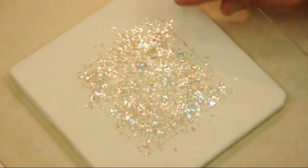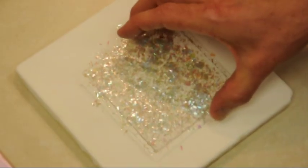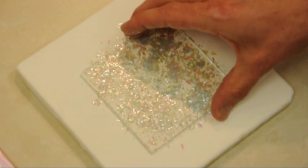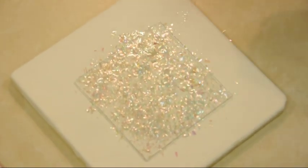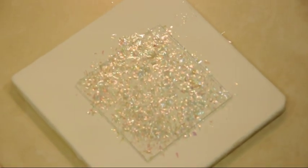Once you're done applying the dichroic to the kiln shelf, we're going to take a piece of clear glass and set it on top of that and fire it. You can do a single layer or a double layer of clear, that's totally up to you.